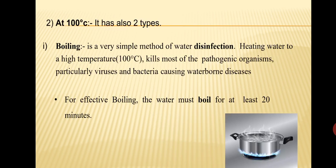At 100°C, there are two subtypes. First, boiling: heating water to 100°C kills most pathogenic organisms, particularly viruses and bacteria causing waterborne diseases. For effective boiling, water must boil for at least 20 minutes, making it the most effective method for water disinfection.